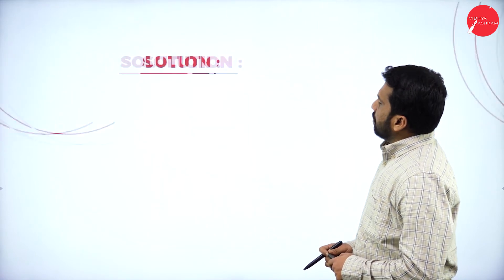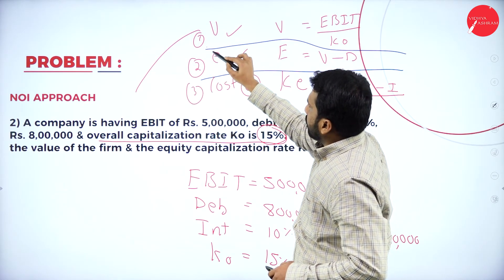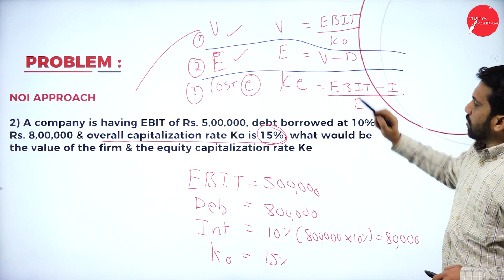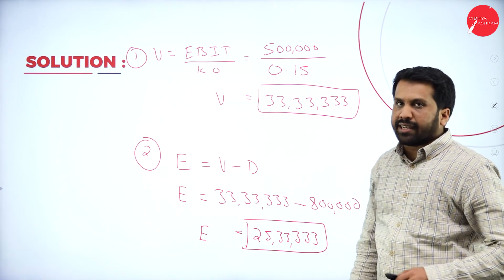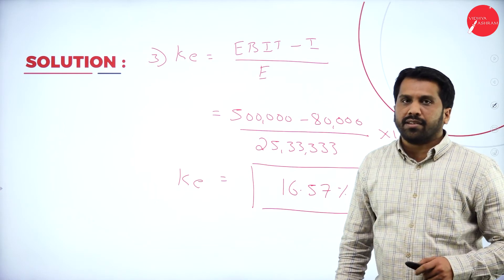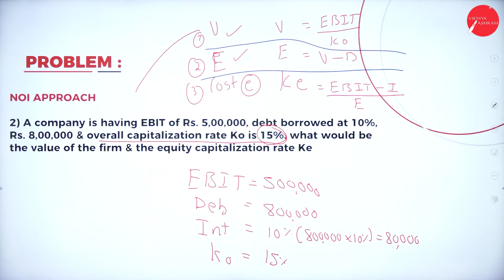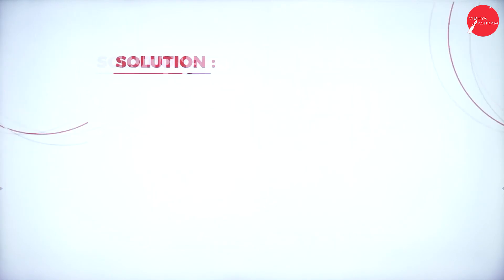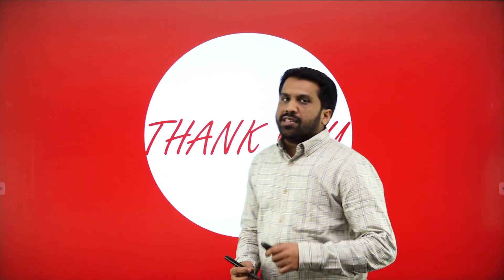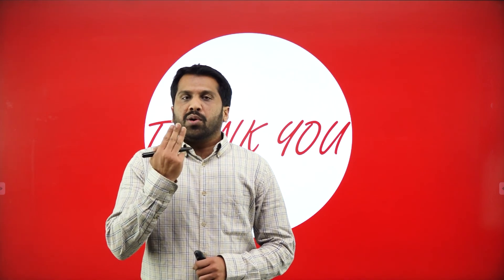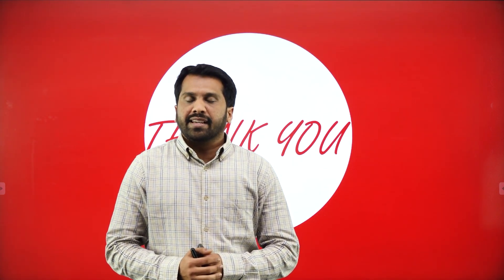I will go back to all the slides — you can take a screenshot. Under the NOI approach, we used three formulas: value, equity, and cost of equity. This is all about NI and NOI approach. Only three formulas for NI and three formulas for NOI. Please work out at home without seeing the formulas or the answers. Thank you.